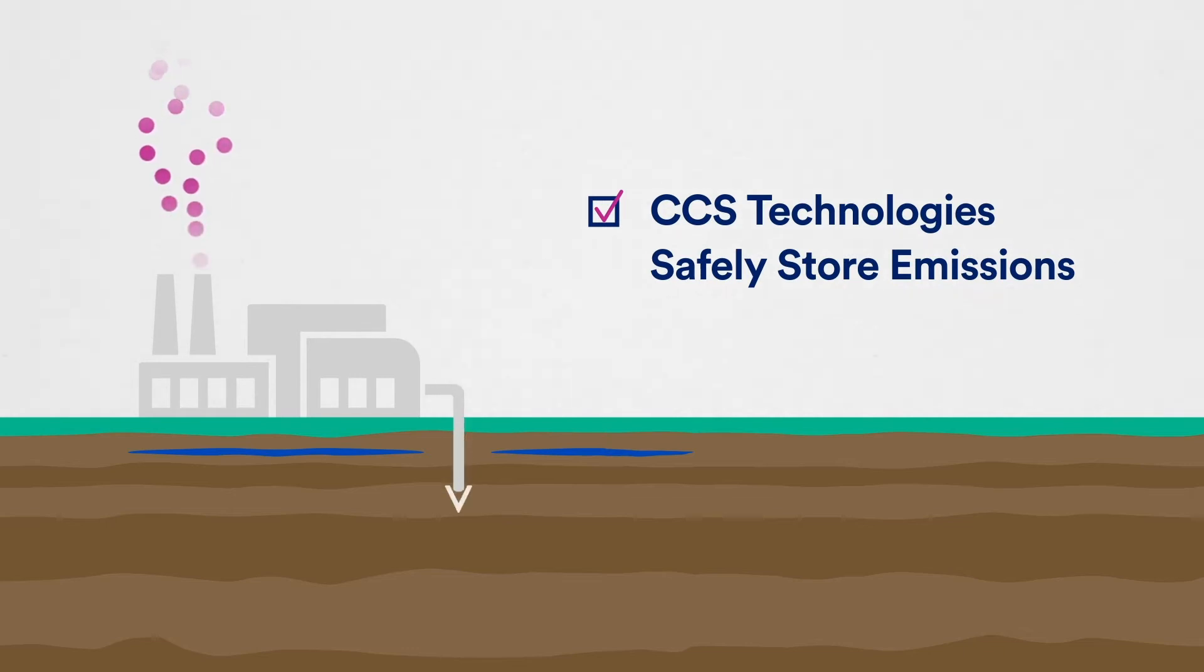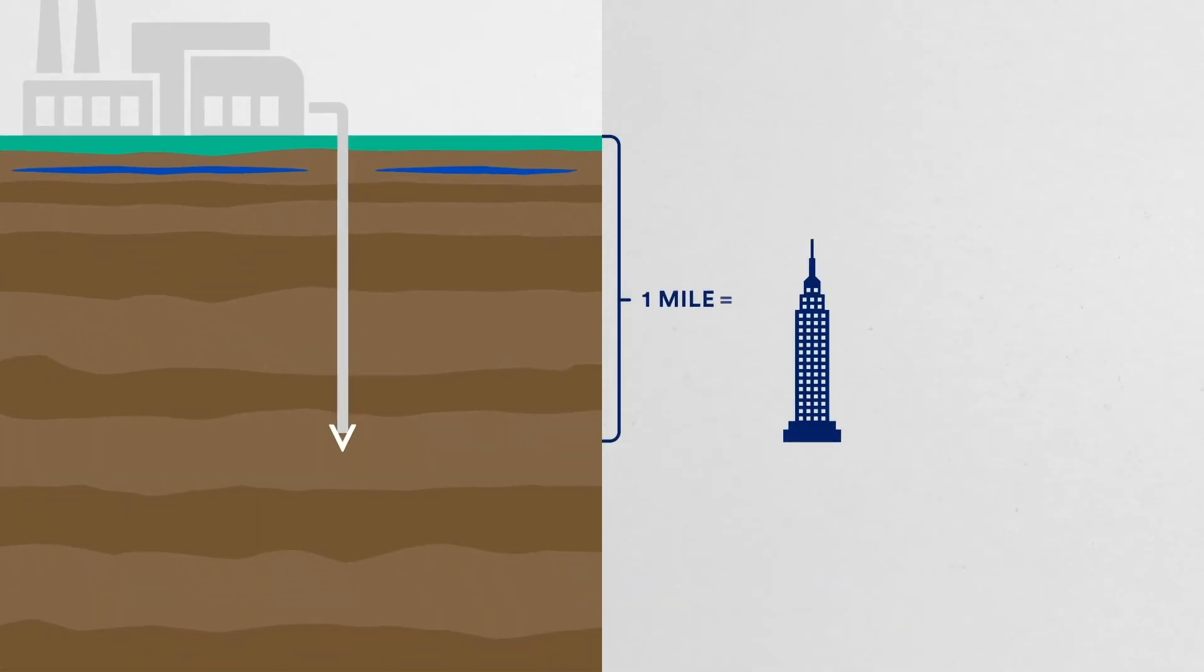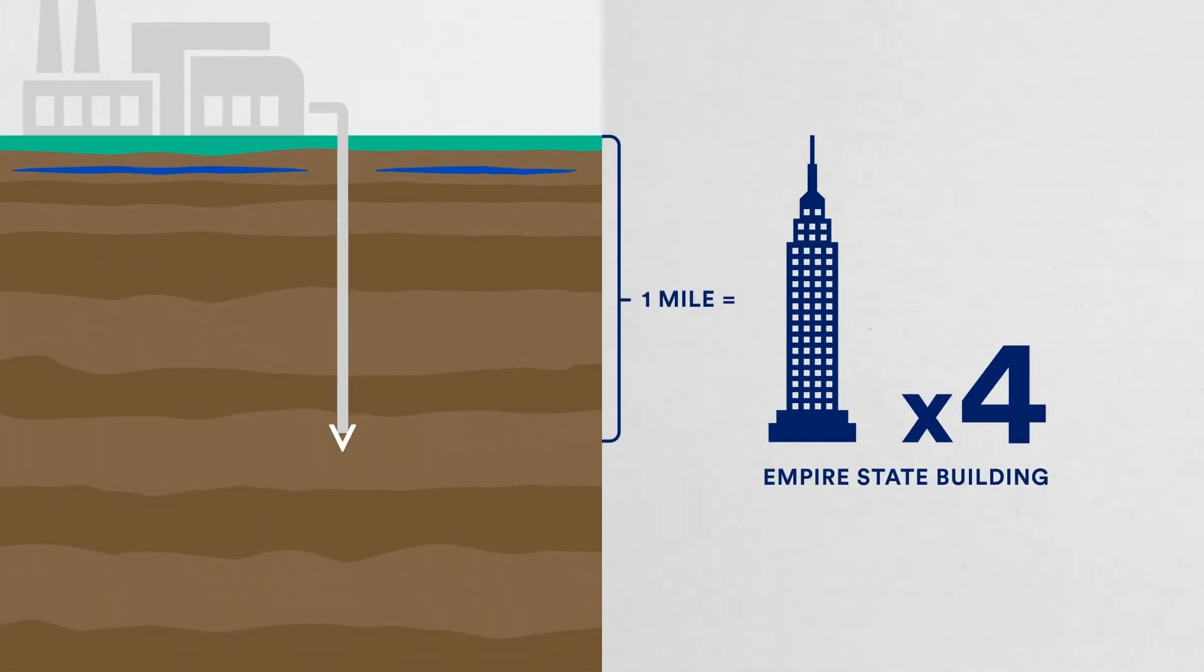Permanent and secure storage occurs when CO2 is injected below the Earth's surface, typically a mile deep.